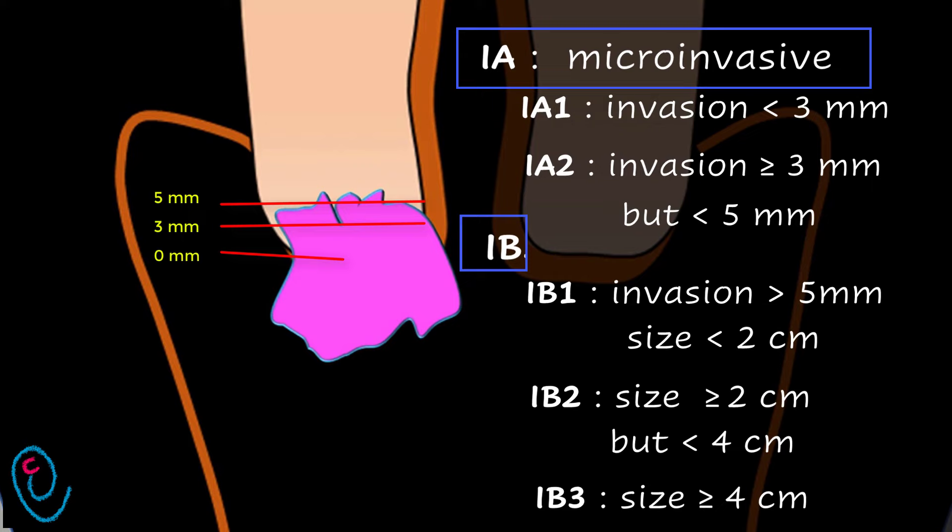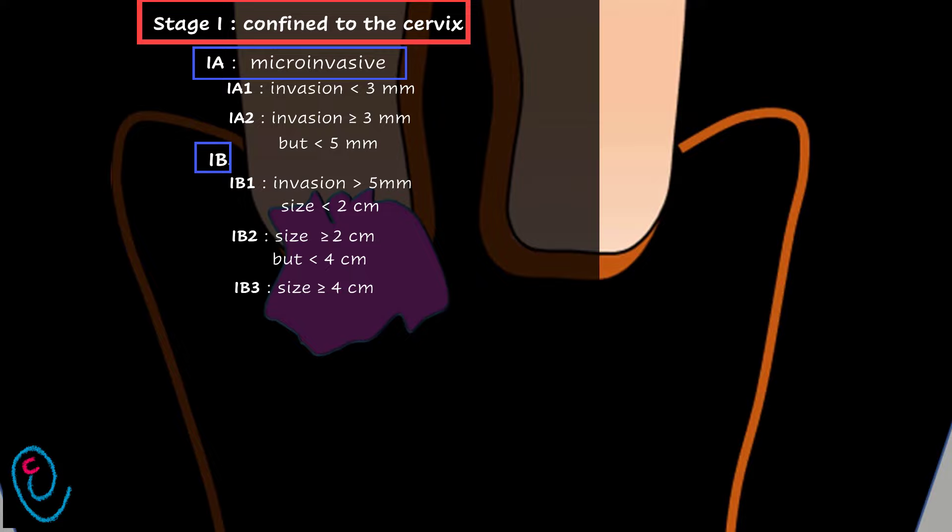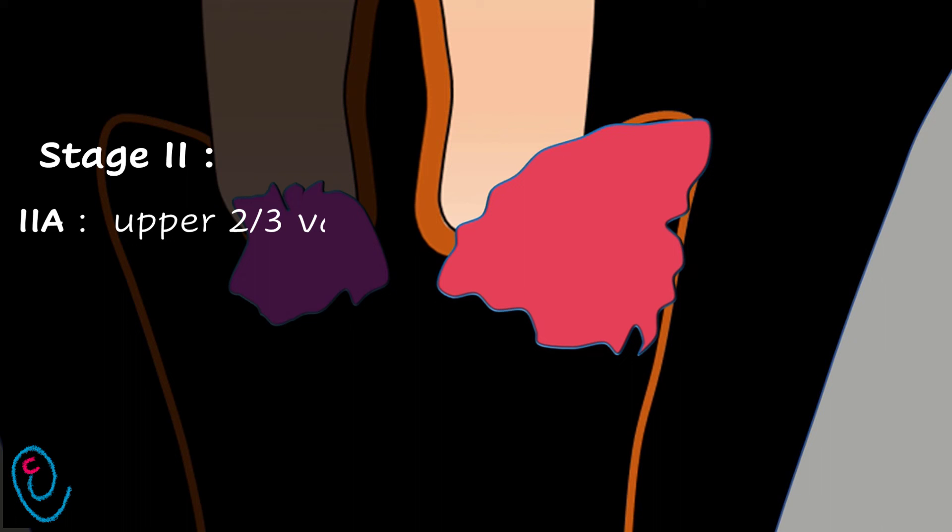Stage 1, whether 1a or 1b, is confined to the cervix. When the tumor extends beyond the cervix and involves the upper two thirds of the vagina, it becomes stage 2a.